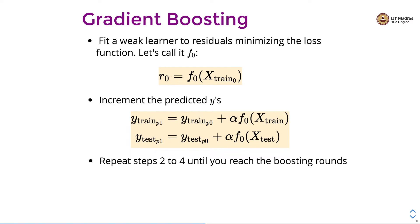F0 takes x-train-0 as the input and produces R0. We increment the predictions by adding alpha times the prediction of this weak learner. For the test predictions we also add alpha times the prediction from the weak learner. We repeat these steps until we reach the desired accuracy or the pre-decided number of boosting rounds.